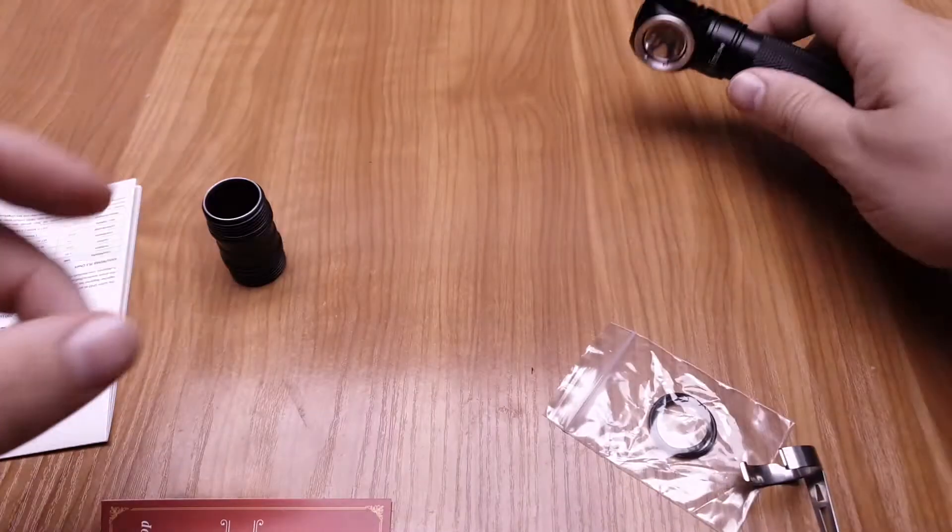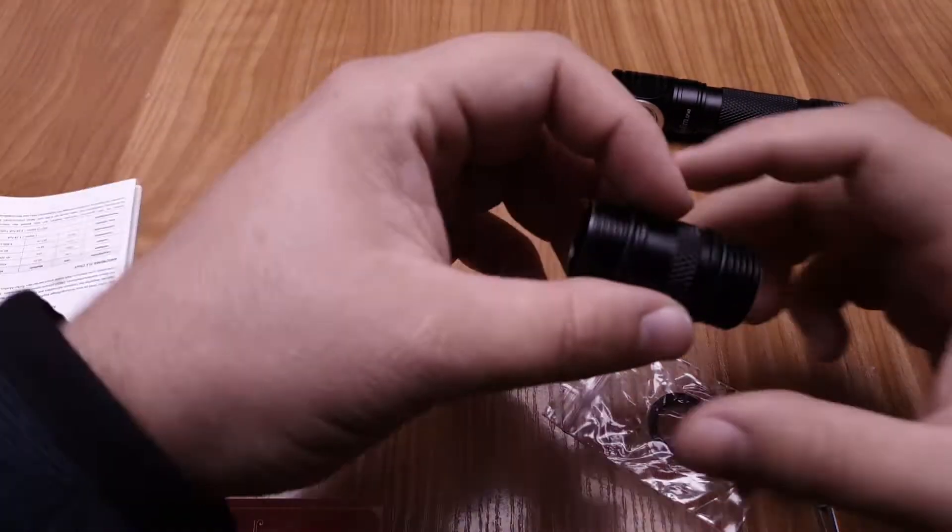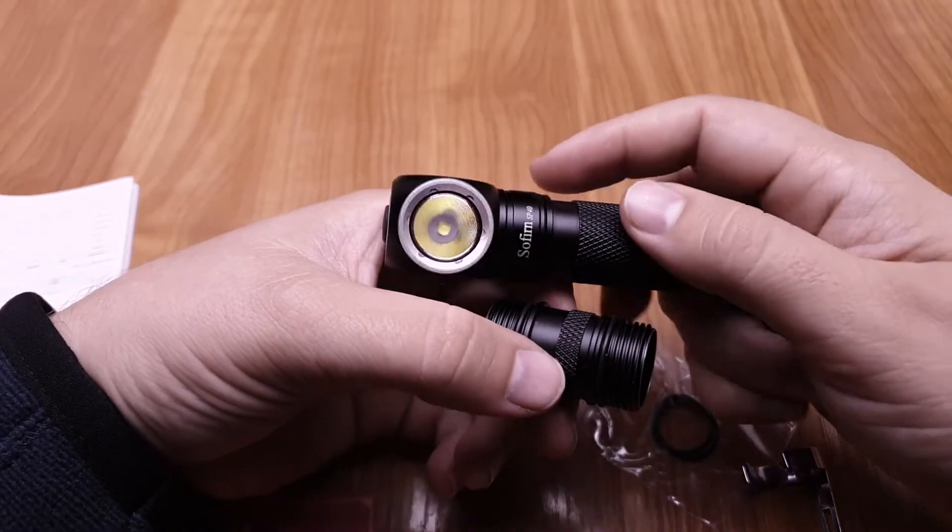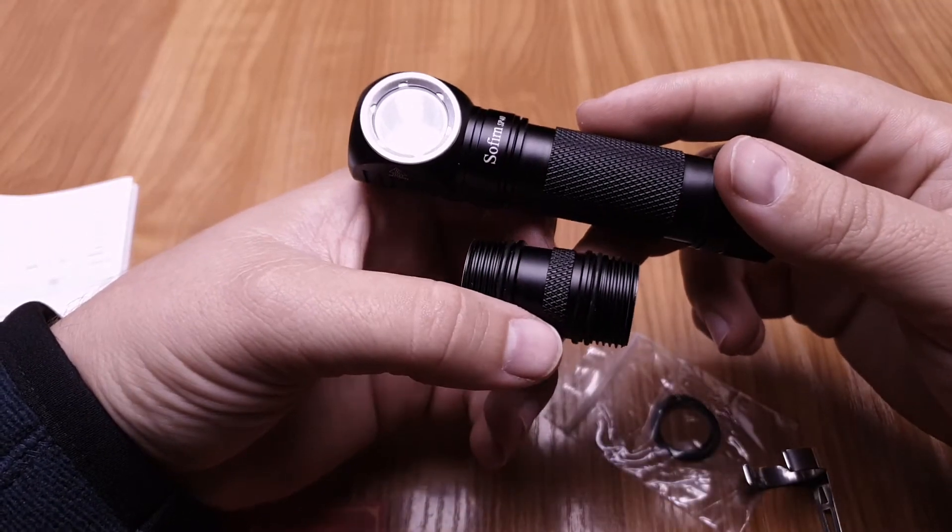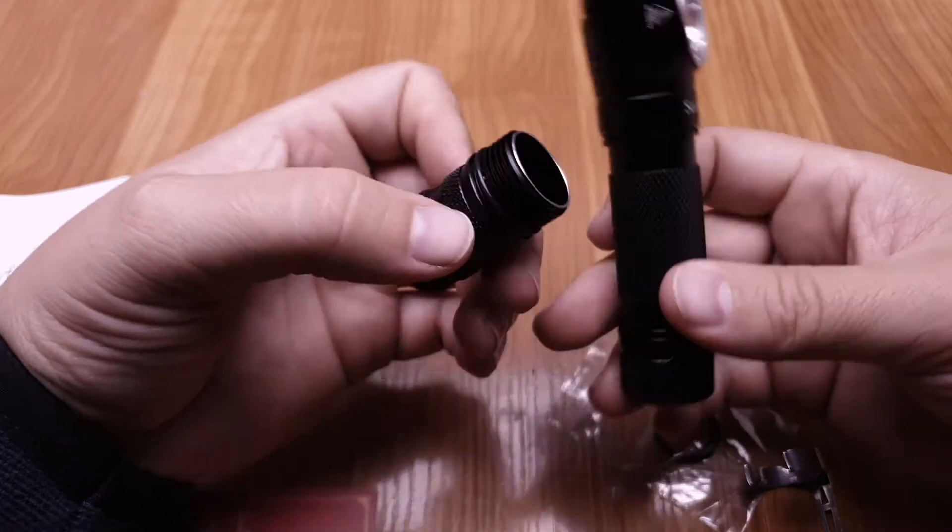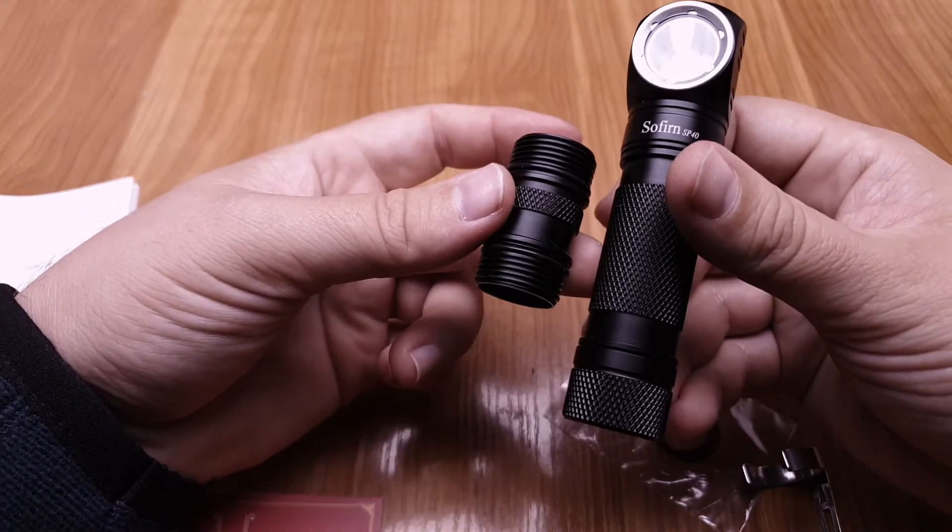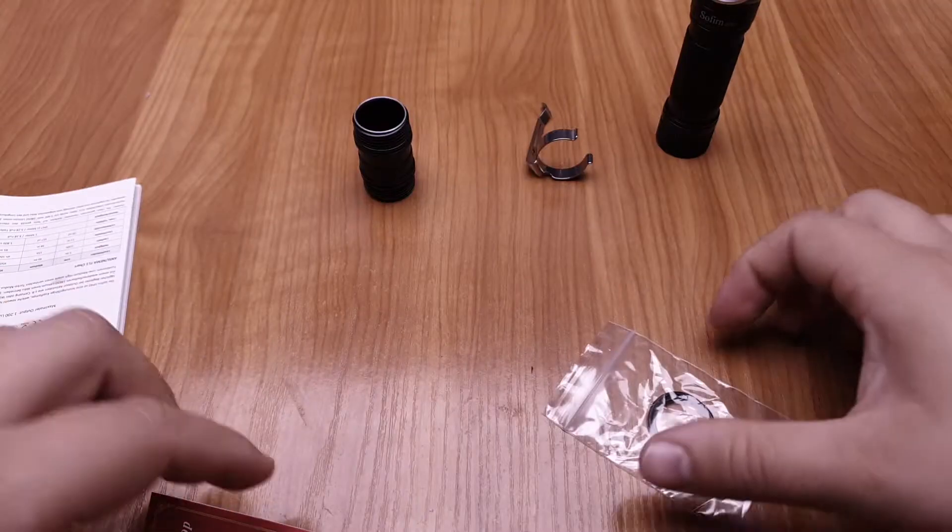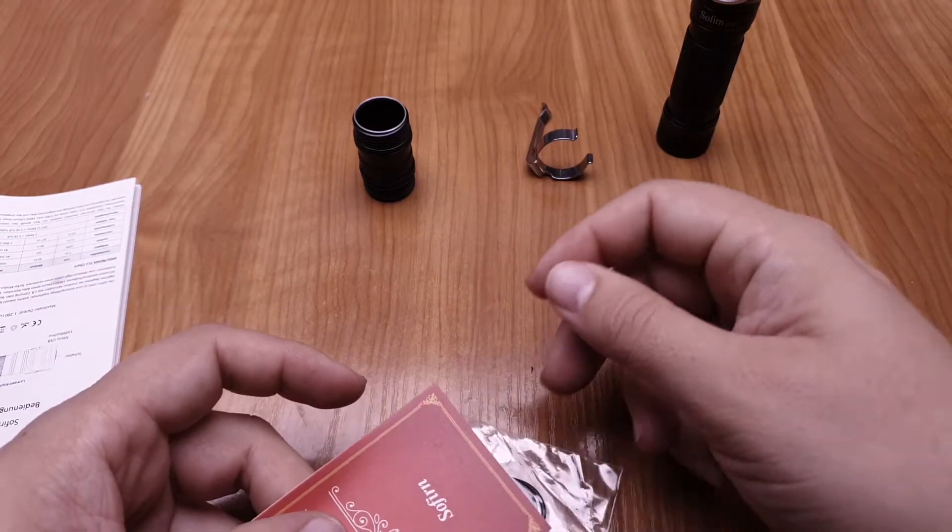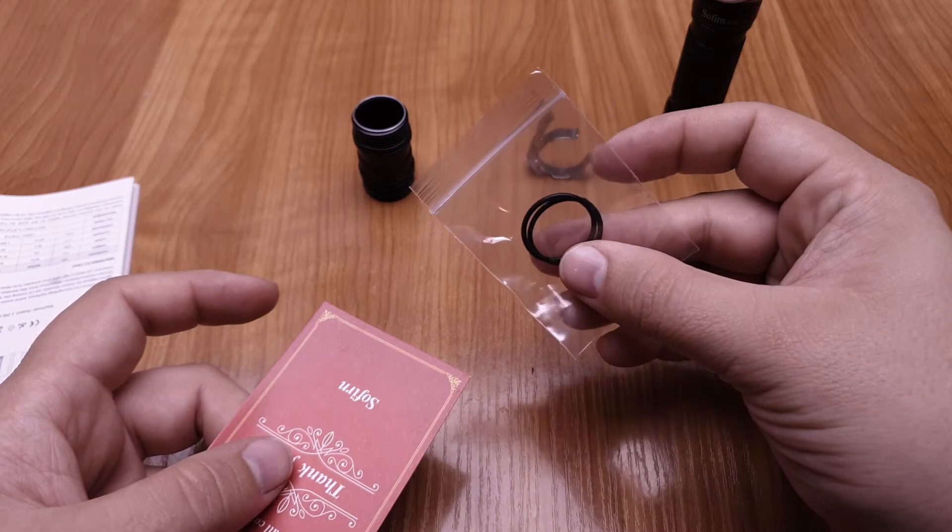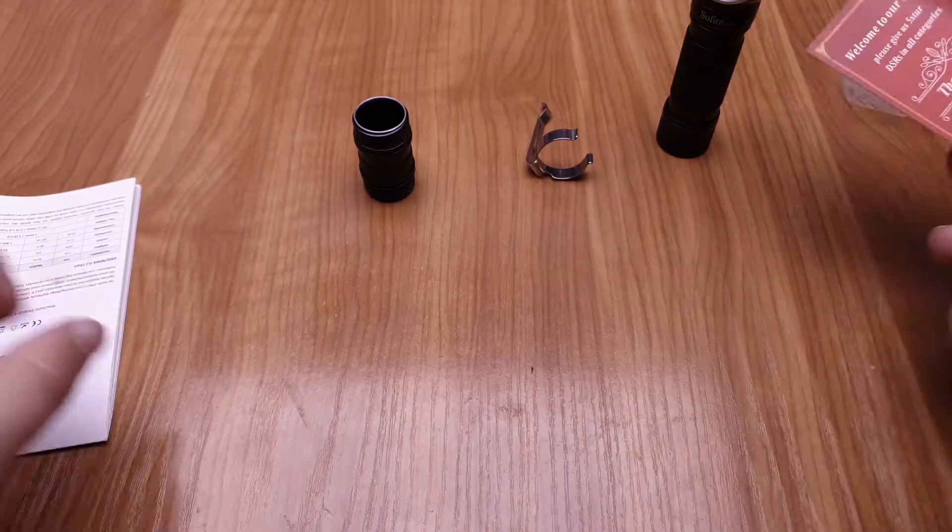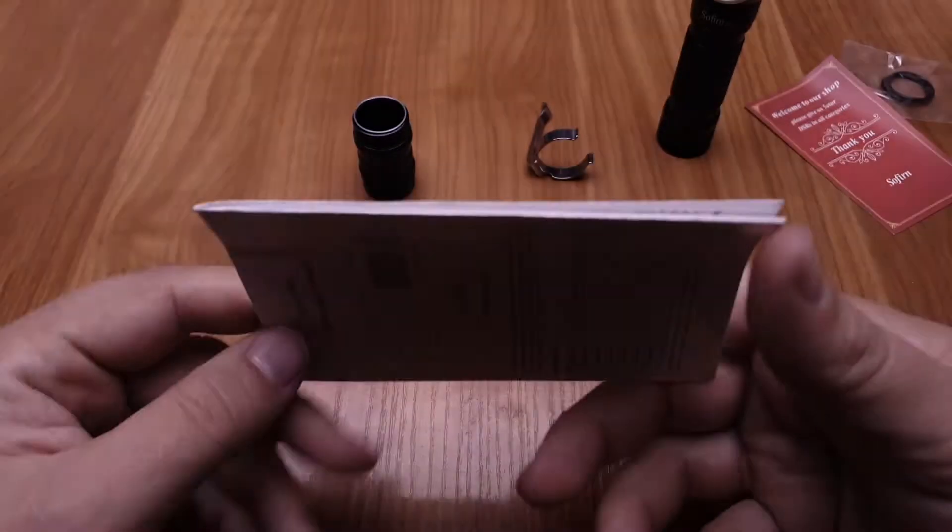Okay, let's see what other things in the box. It's mainly using an 18650, but you have an 18350 tube in the box. And what other things in the box. O-rings, spare O-rings. Thank you card and the user manual.